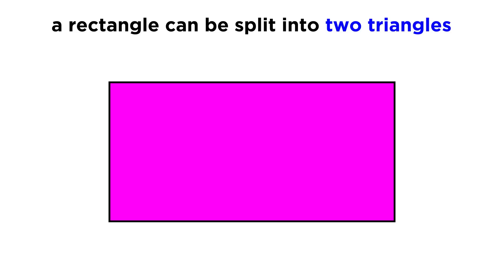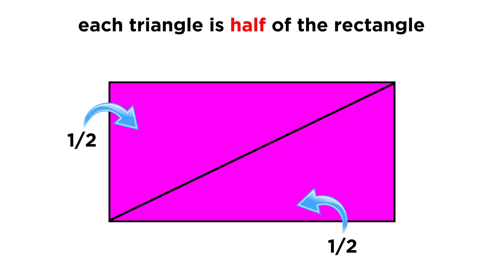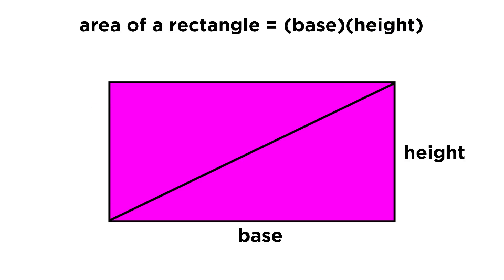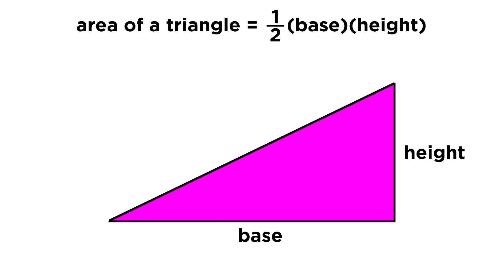Now that we are back to rectangles, let's draw the diagonal, thus splitting it into two triangles. Each triangle has half the area of the rectangle. That's how we get the area of a triangle. We multiply the base times the height, which would give us the area of the rectangle this triangle fits into, but then we cut it in half. One half base times height.